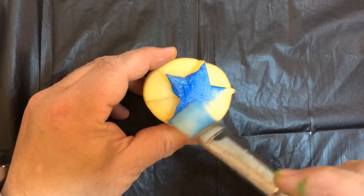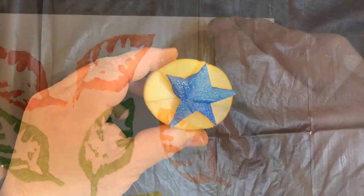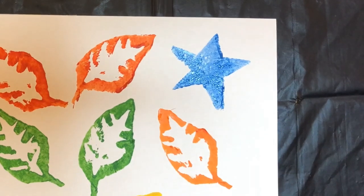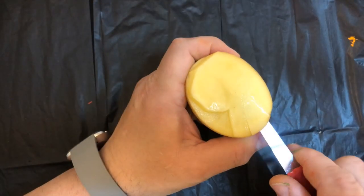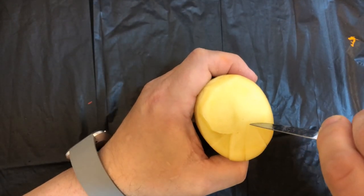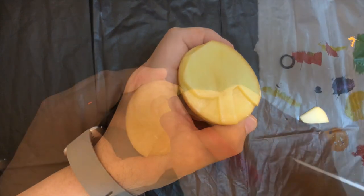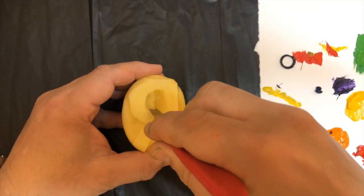You can keep carving new shapes. If you carve letters or numbers, you have to do them in the reverse. That way, they'll print in the correct direction.